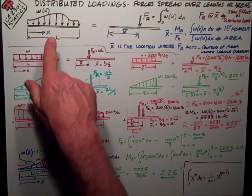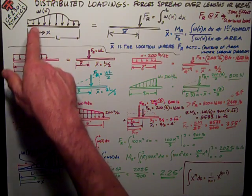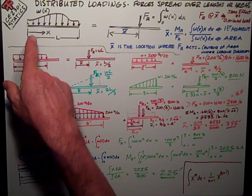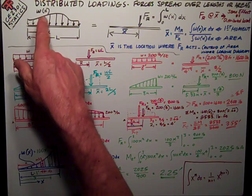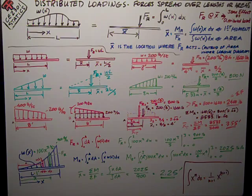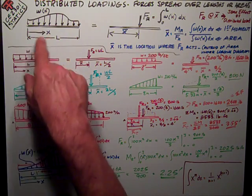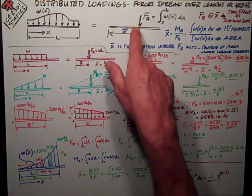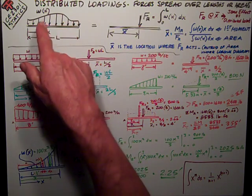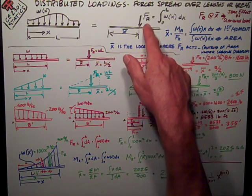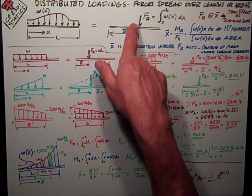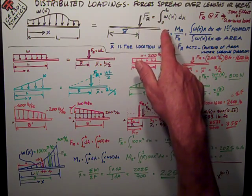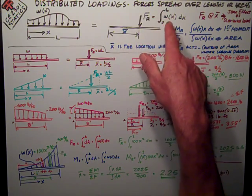We're going to talk about this conceptualized loading. It's a function of the x distance from some end or some point, and the load at any point along that curve is magnitude w of x, a function of x. We're going to want to figure out what the resultant force of that distributed load is, which is represented by this FR resultant force, equal to the integral of the area under that curve, which is the integral from 0 to L of wx dx.